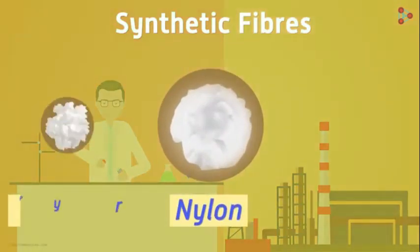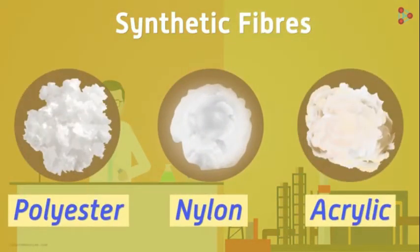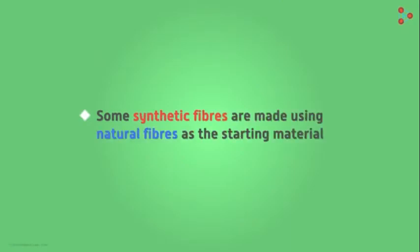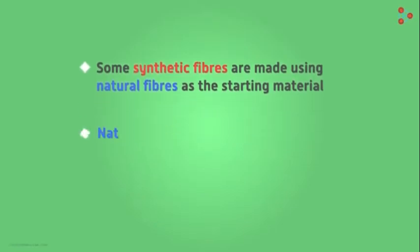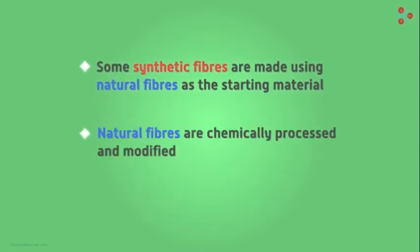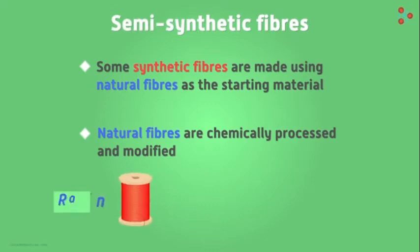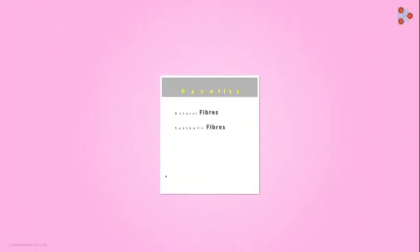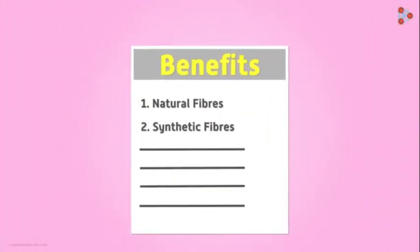Do you know that some synthetic fibers are made using natural fibers as the starting material? Yes, it's true. Natural fibers are chemically processed and modified to gain another category called semi-synthetic fibers. Rayon and artificial wool are examples of this category. However, natural fibers still top the chart, especially in the garment industry, for their various benefits over synthetic fibers. Next, let's get to know about a few natural fibers and understand the process of weaving yarn to obtain fabric.